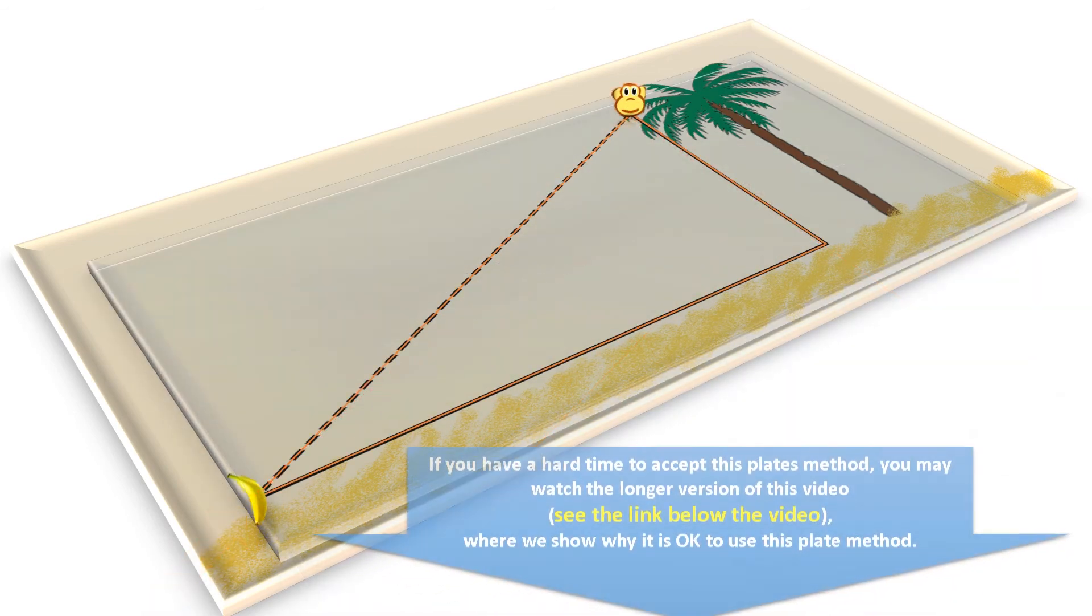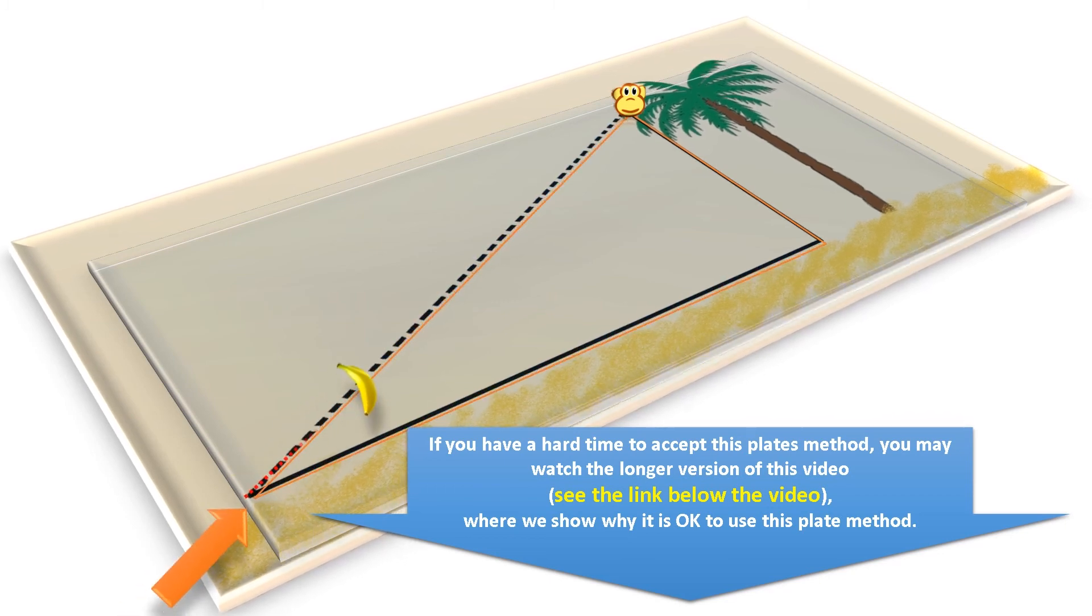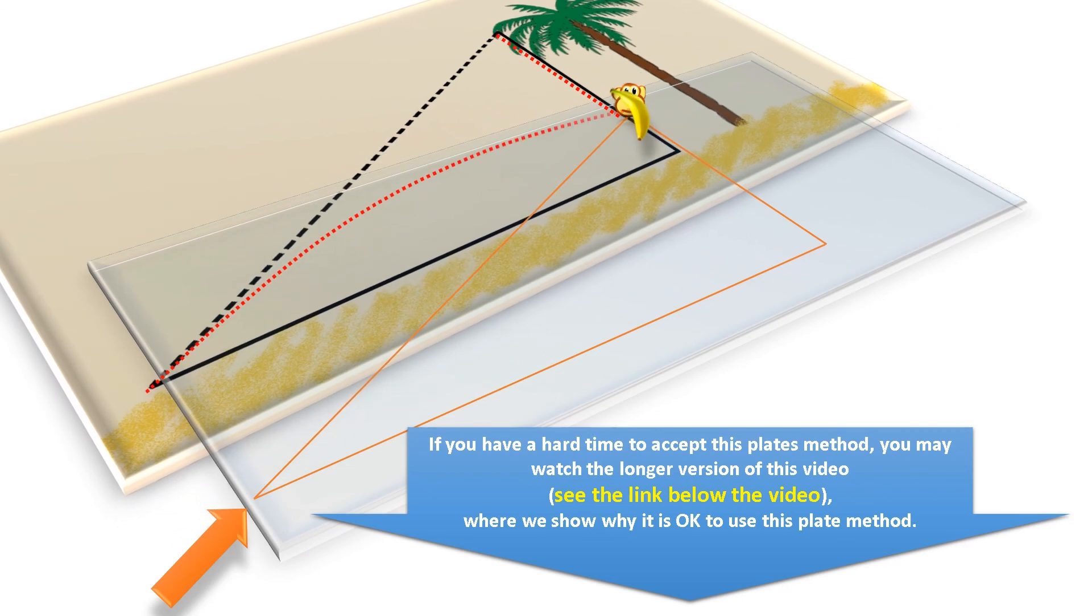In the previous examples, we had our camera fixed to the world, the lower plate. Now, let's fix the camera to the upper plate, so the monkey will not move. Of course, that only changes the perspective, but the result is the same.